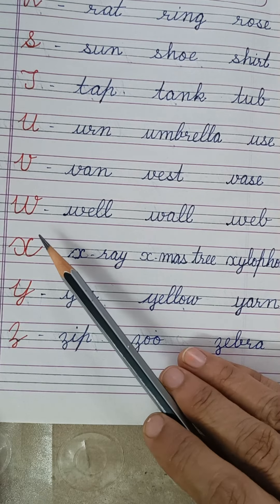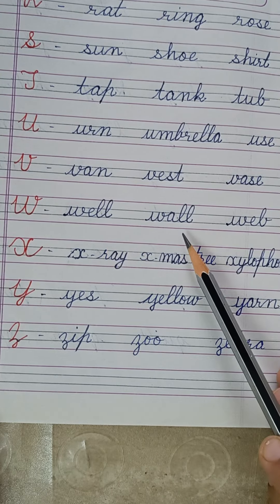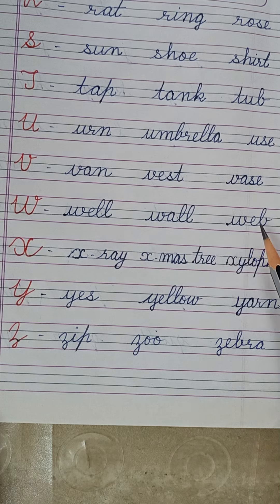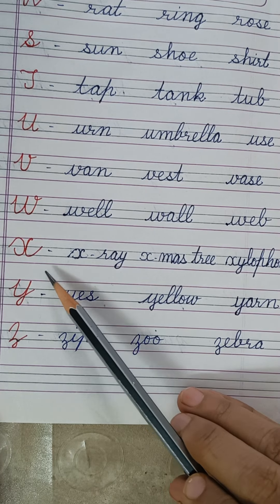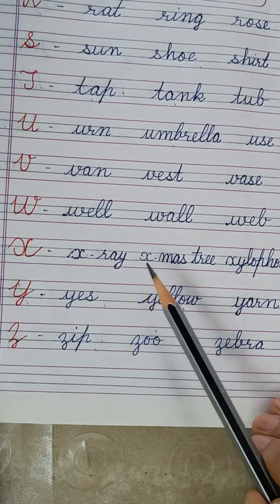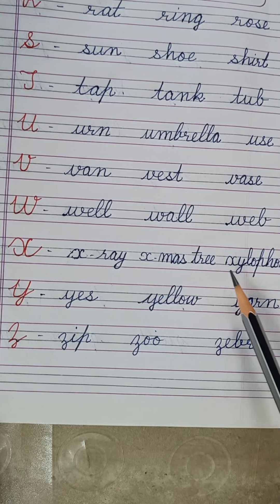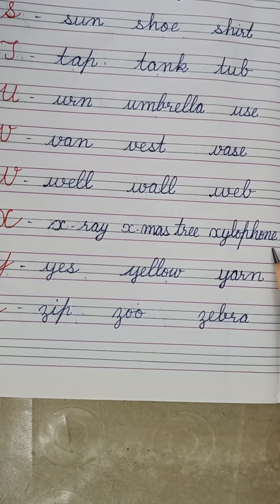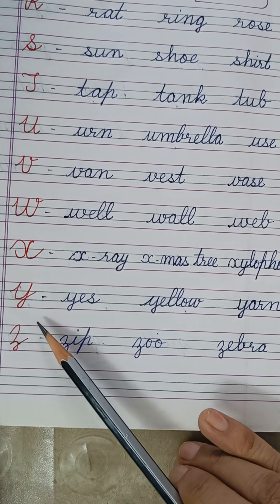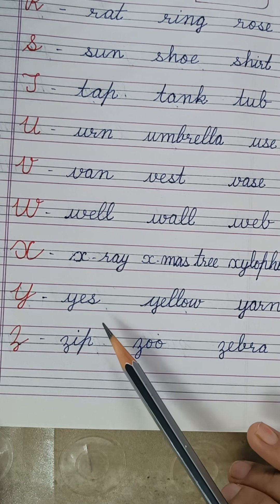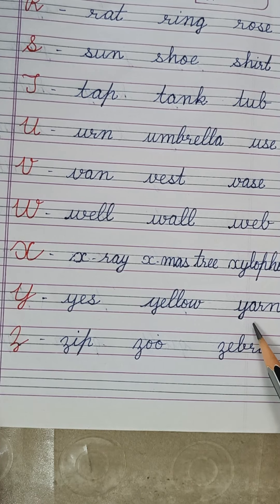From W we will make well, wall, and web. From X we will make x-ray and xylophone. From Y we will make yes, yellow, and young.